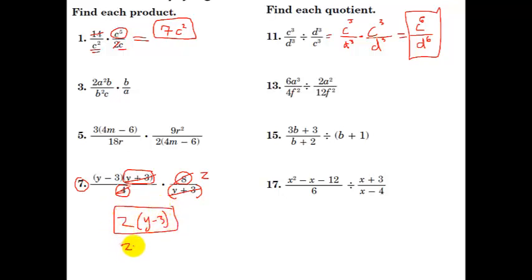So that will be your final answer. You could distribute this in and you could get 2y minus 6. I'm not sure how the answers in the back of the book will be, so be aware that you might need to check both. And let's put some excluded value here. Y should not equal what?